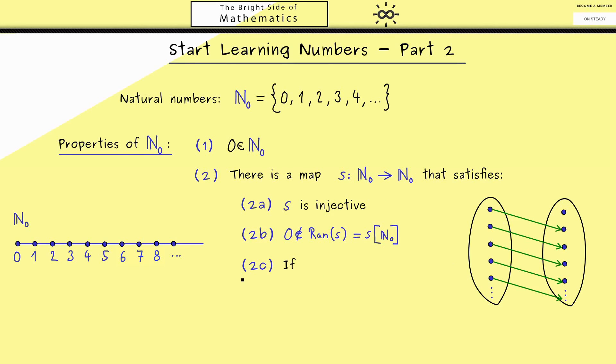And now the third property explains that ℕ₀ is essentially the smallest possible infinite set. If M is any subset of the natural numbers that fulfills that 0 is an element in M and also that all successors lie in M again, then with the same picture in mind M would be an infinite set. Therefore it has to be ℕ₀.